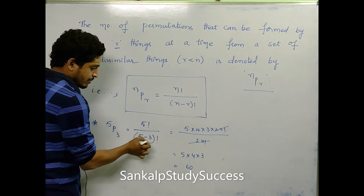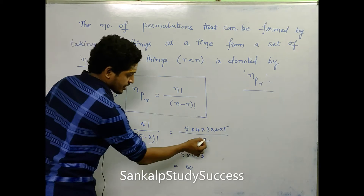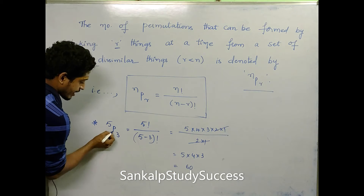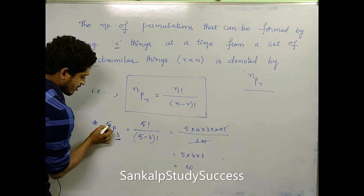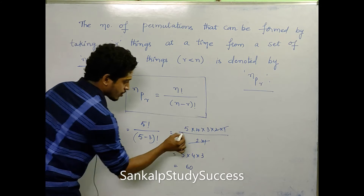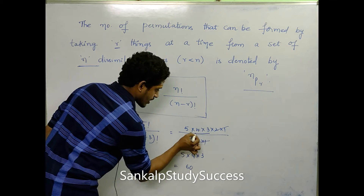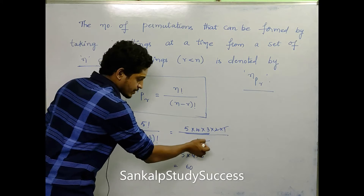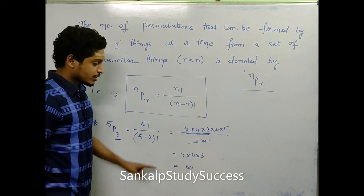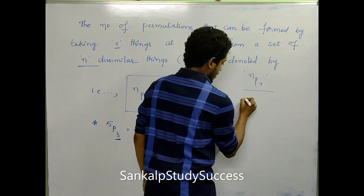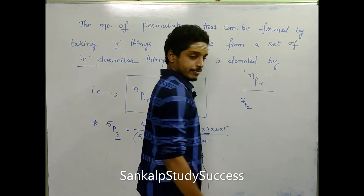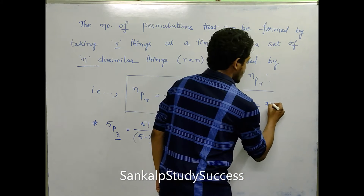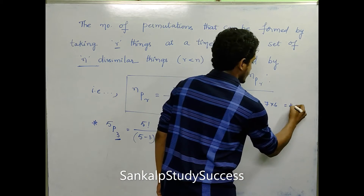There is a shortcut: if you put the formula in, the denominator and numerator will cancel. For 5P3, count 3 terms starting from 5. For 7P2, starting from 7, only 2 terms: 7 into 6 equals 42.